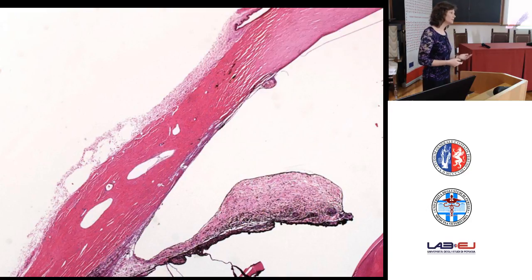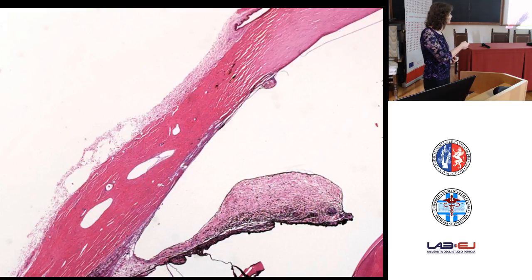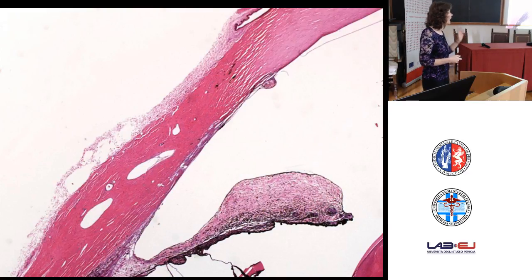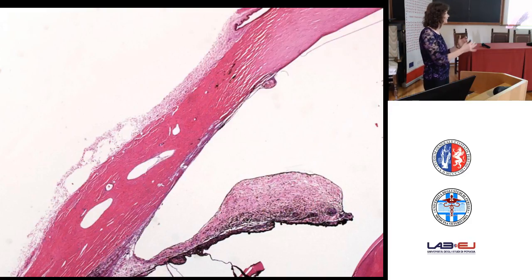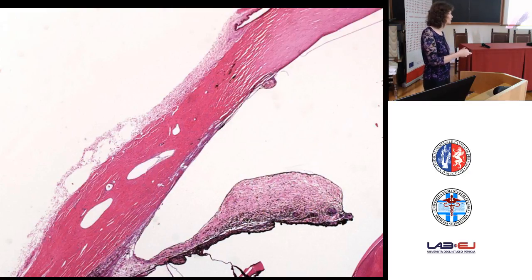Hypoplastic lesions affecting the uveal tract — here is the normal thickness compared to this very thin area. Not enough connective tissue remained in this location. That is hypoplasia that can very much look like atrophy we see in older animals — another change where congenital and age-related acquired changes can look the same.